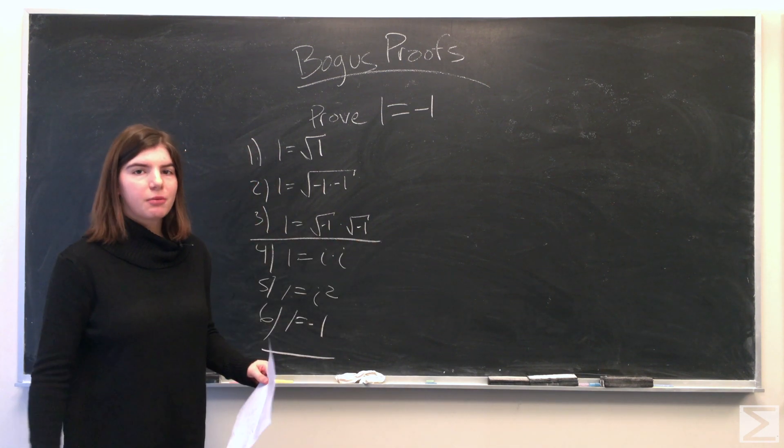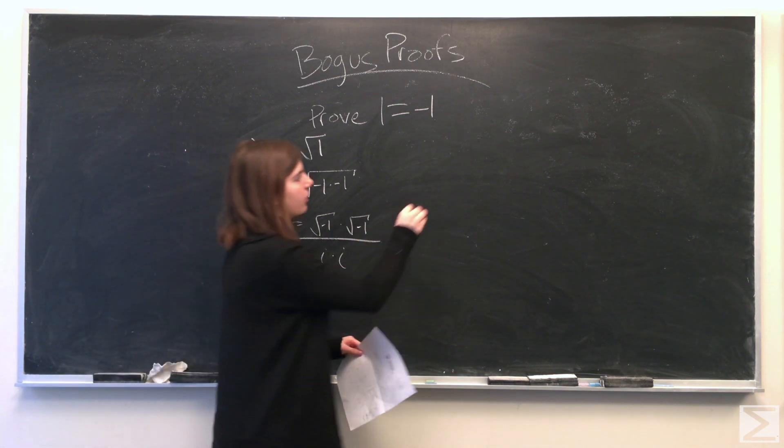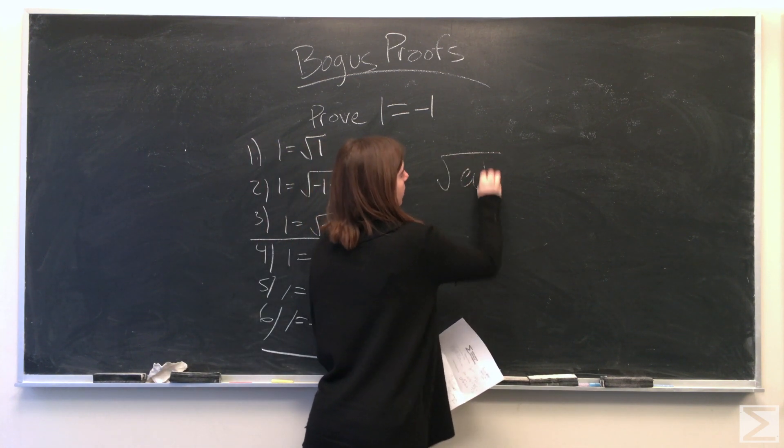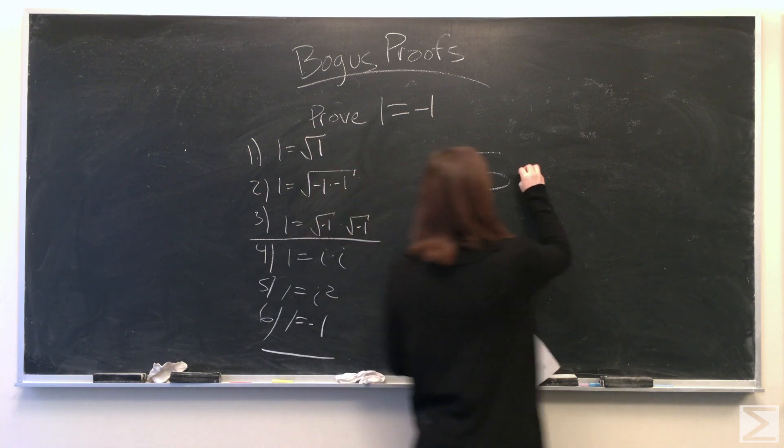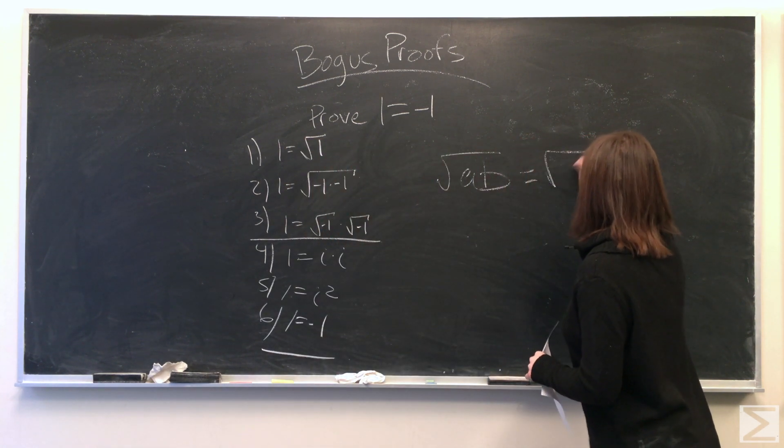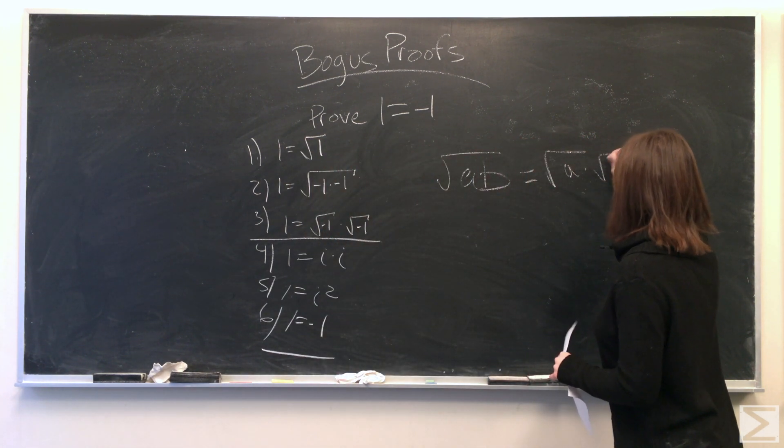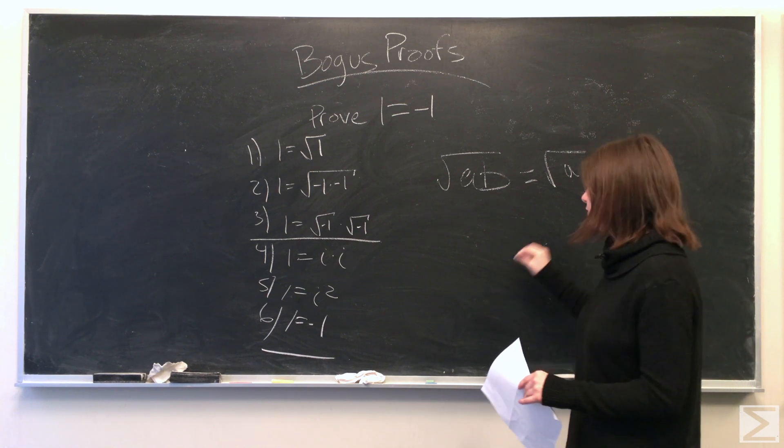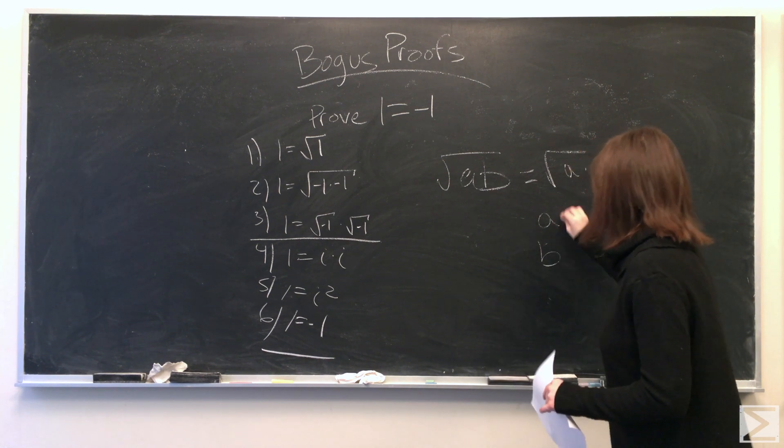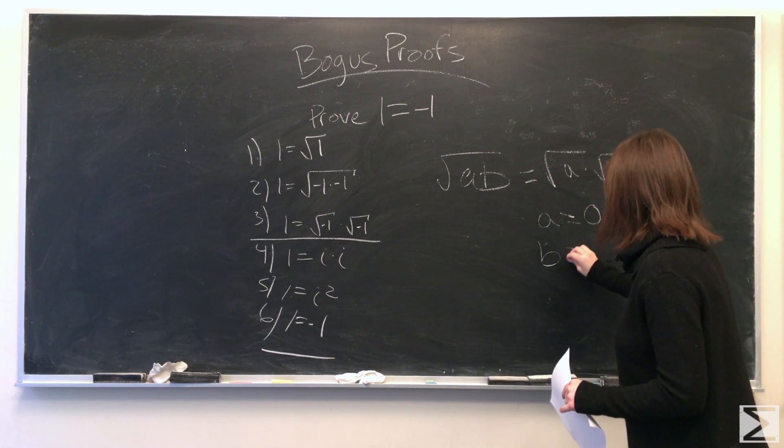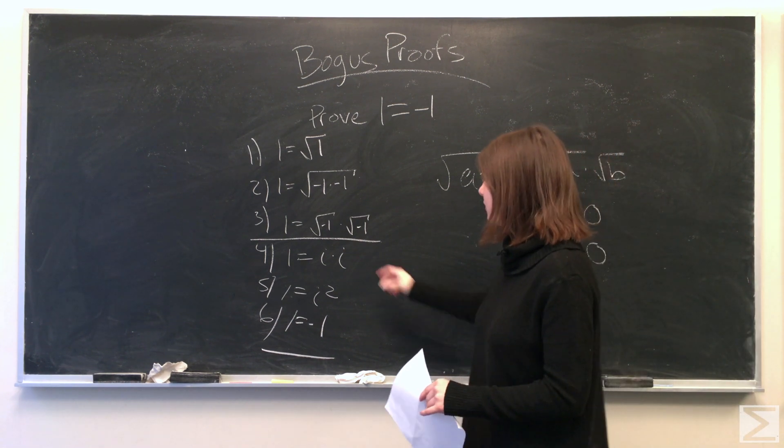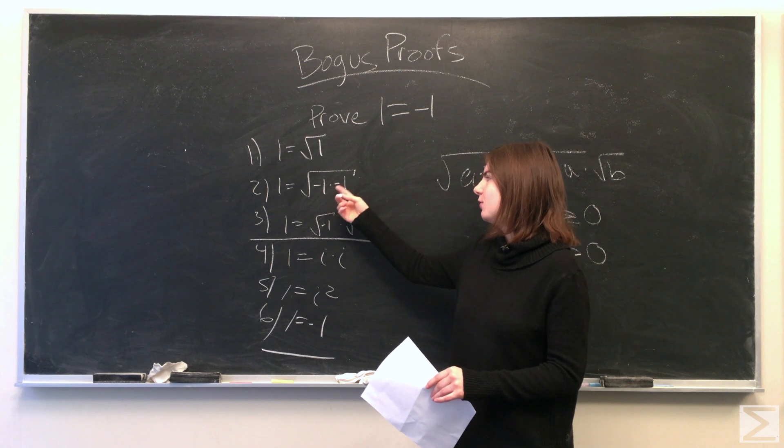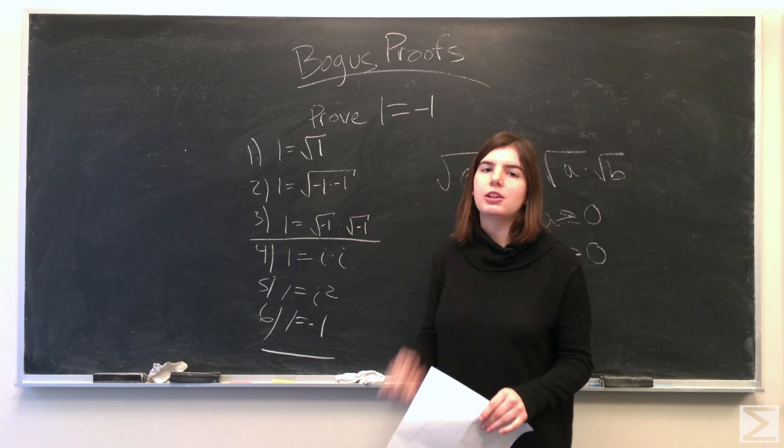So for the product property of square roots, when you have the square root of a product, that's equal to the square root of each of the factors multiplied together only if the factors are greater than or equal to 0. In our case, we have the square root of negative 1 and the square root of negative 1, so we can't use this rule.